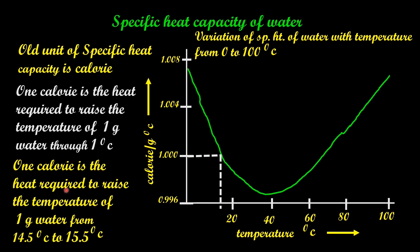One calorie is the heat required to raise the temperature of 1 gram of water from 14.5 degrees Celsius to 15.5 degrees Celsius. The specific heat capacity of water is equal to 1. I hope this is clear.